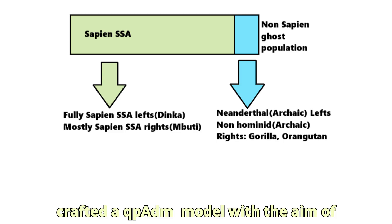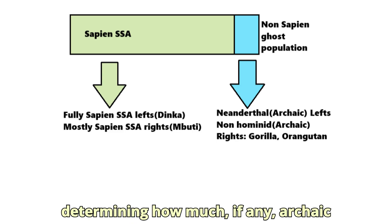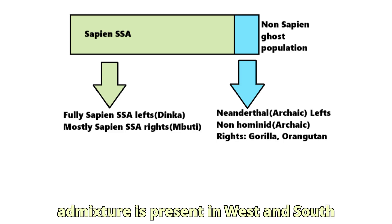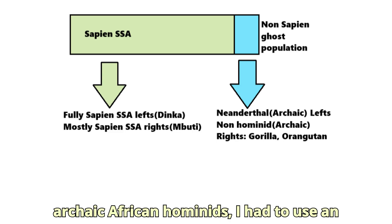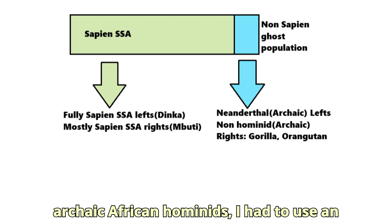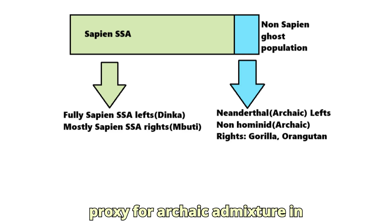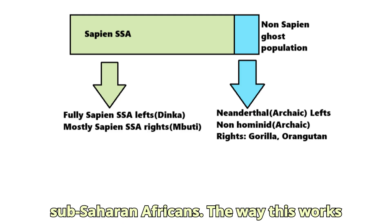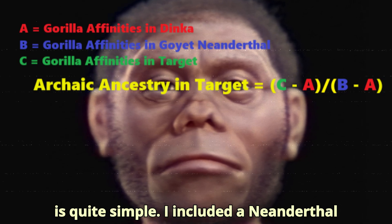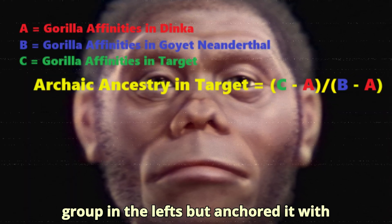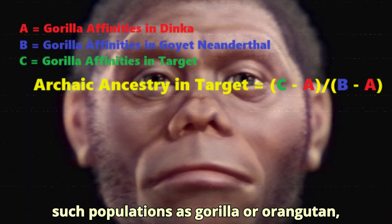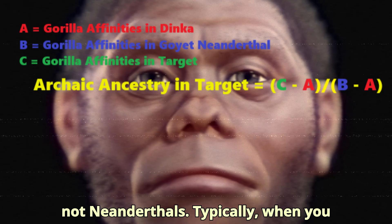I crafted a QBDM model with the aim of determining how much, if any, archaic admixture is present in West and South Africans. Since we have no genomes of archaic African hominids, I had to use an obscure method using Neanderthals as a proxy for archaic admixture in Sub-Saharan Africans. I included a Neanderthal group in the lefts but anchored it with such populations as gorilla or orangutan, not Neanderthals.